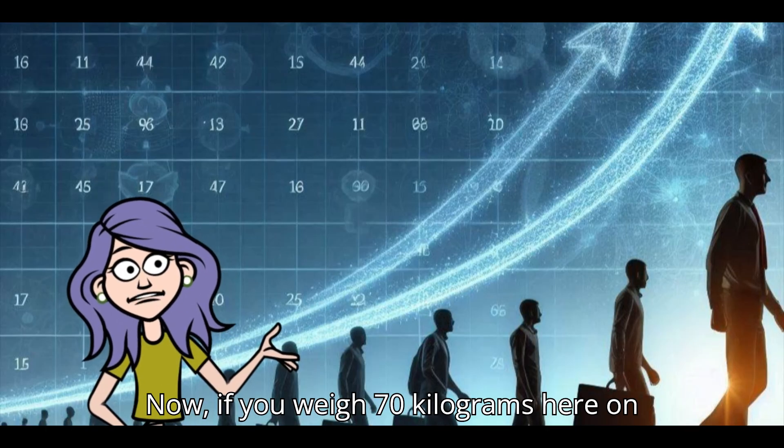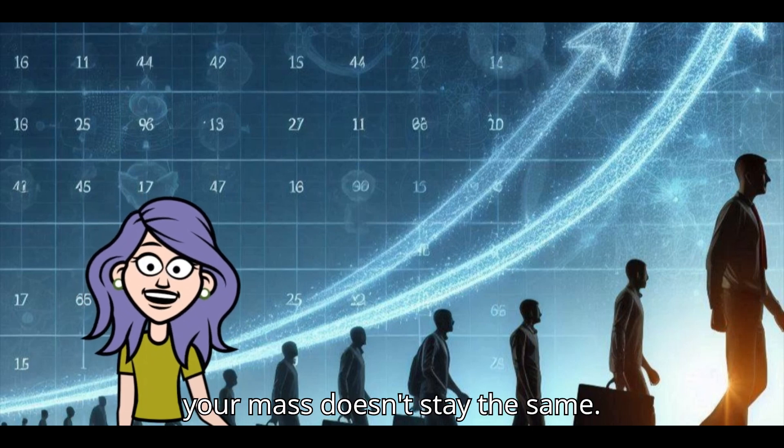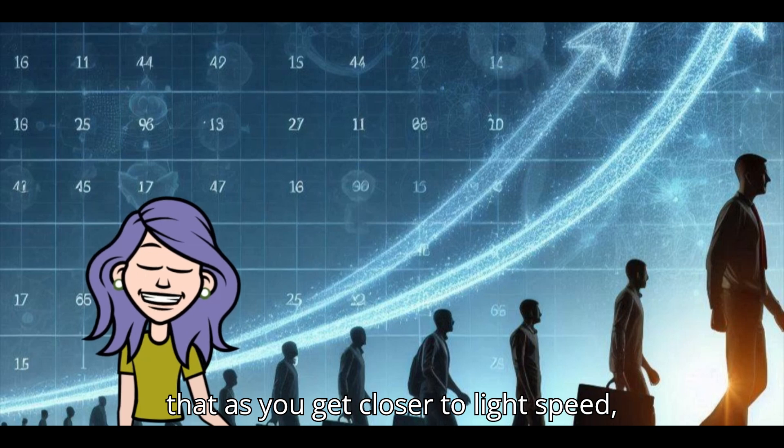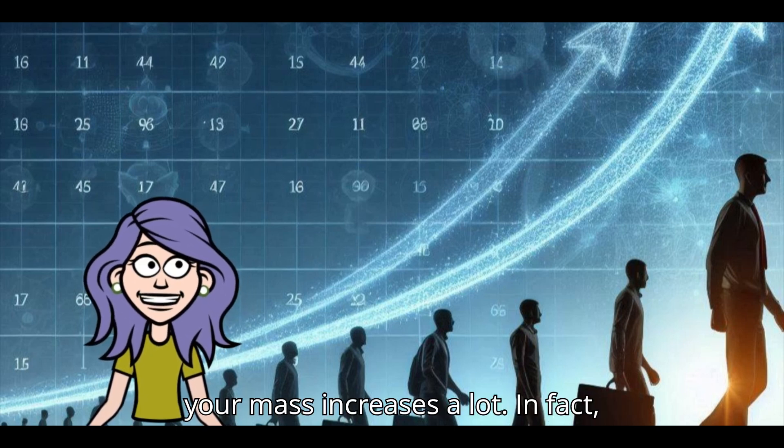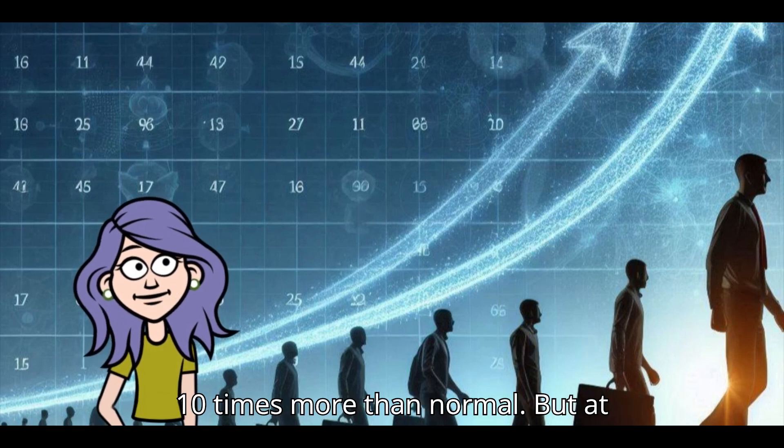Now, if you weigh 70 kilograms here on Earth and start moving faster and faster, your mass doesn't stay the same. Einstein's relativity equation tells us that as you get closer to light speed, your mass increases a lot. In fact, at 99% the speed of light, you'd weigh 10 times more than normal.